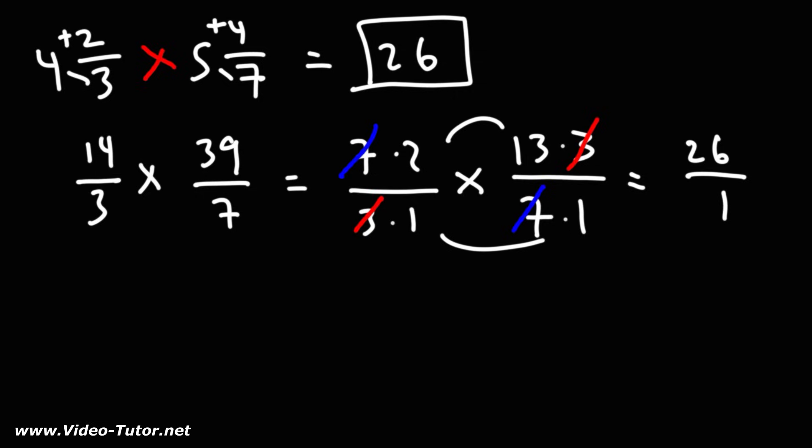So that's how you can multiply mixed numbers together. The key is to convert them to improper fractions and then multiply across. And if possible, simplify as well.